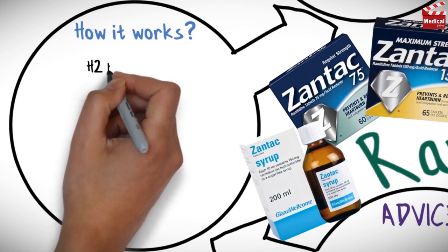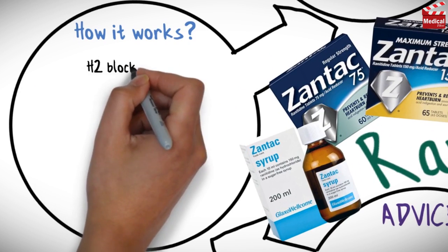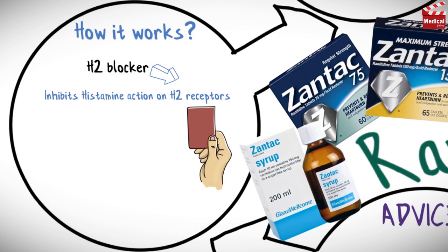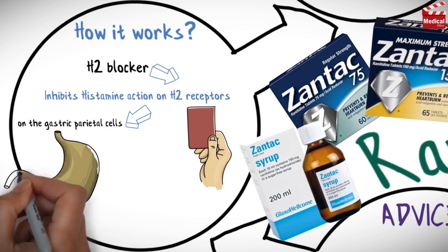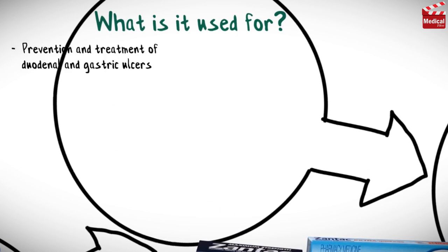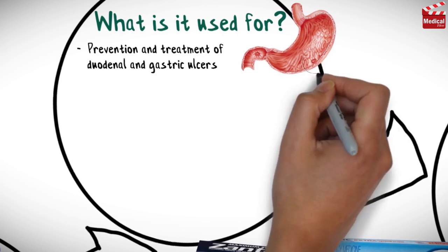Ranitidine belongs to a category of drugs called H2 blockers. It inhibits histamine action on H2 receptors, which are found on the gastric parietal cells, and this action reduces the secretion of gastric acid.